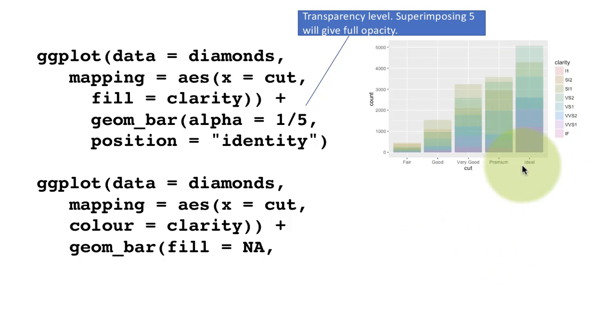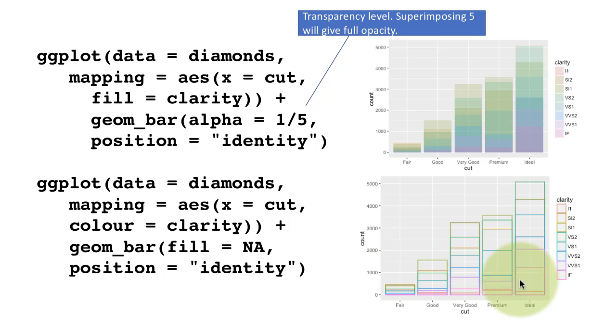The other option to avoid this superimposition problem is to completely tell the system, don't fill the bars at all. Instead, just use the color alone, which means instead of fill, we are using color, which means just the outline of the bar will have the color. So here now we don't have the problem with superimpositions. You will still be able to see all the bars, but there's not much substance in the chart in terms of visual substance, but it's an accurate chart, and it overcomes this problem of overlapping bars. But in either case, we have used position equals identity, which means all of the bars are starting from the bottom.